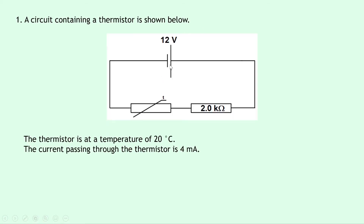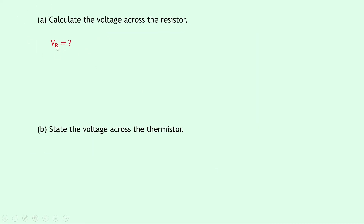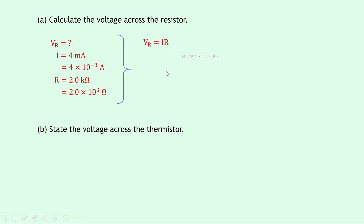Looking at the picture, it is a series circuit, so current is the same at all points. If the current passing through the thermistor is 4 milliamps, it must also be 4 milliamps passing through the resistor. We know I is 4 milliamps, which is 4×10⁻³ amps, and R is 2.0 kΩ, which is 2.0×10³ ohms. Using V_R = IR, substituting in gives 4×10⁻³ × 2.0×10³, which gives a final answer of 8 volts.